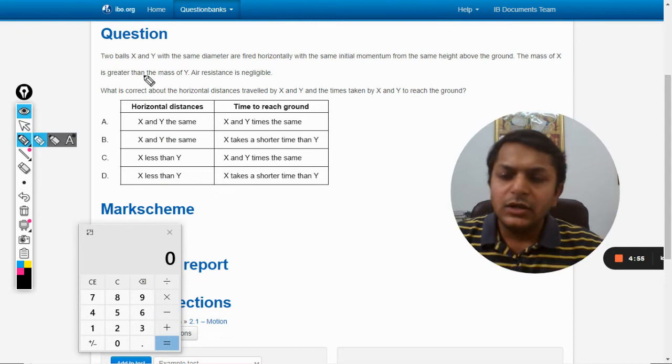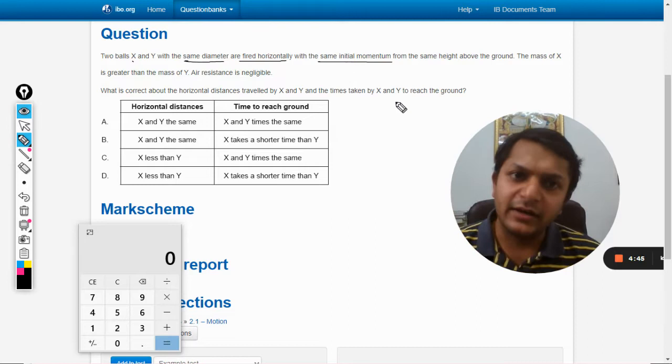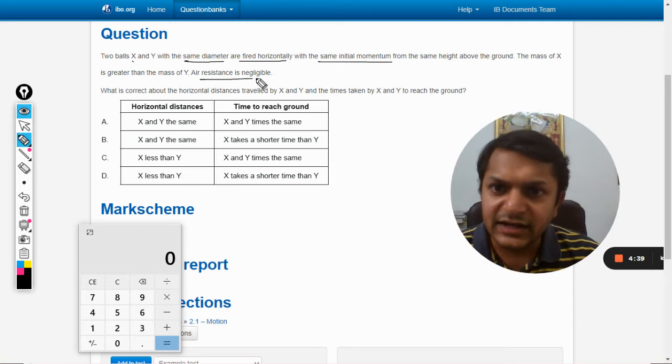Okay dear students, let us read this question first. There are two balls X and Y with the same diameter and they are fired horizontally with the same initial momentum from the same height. The mass of X is greater than the mass of Y.